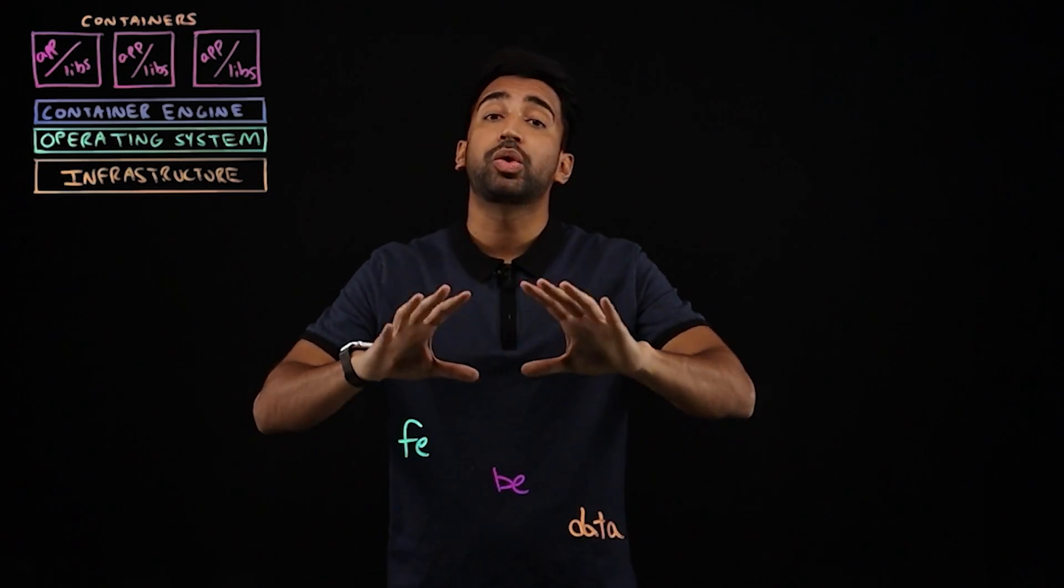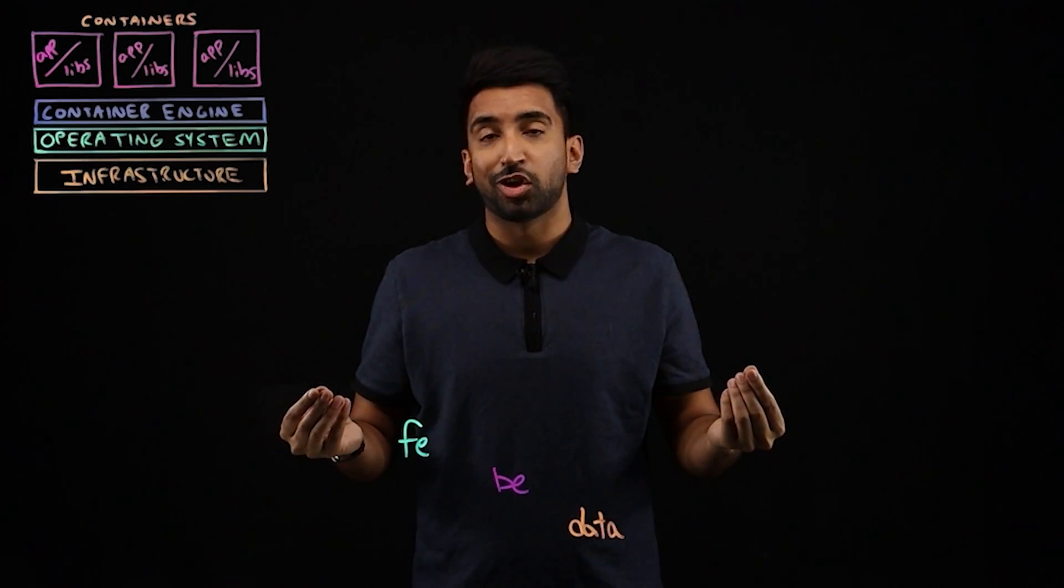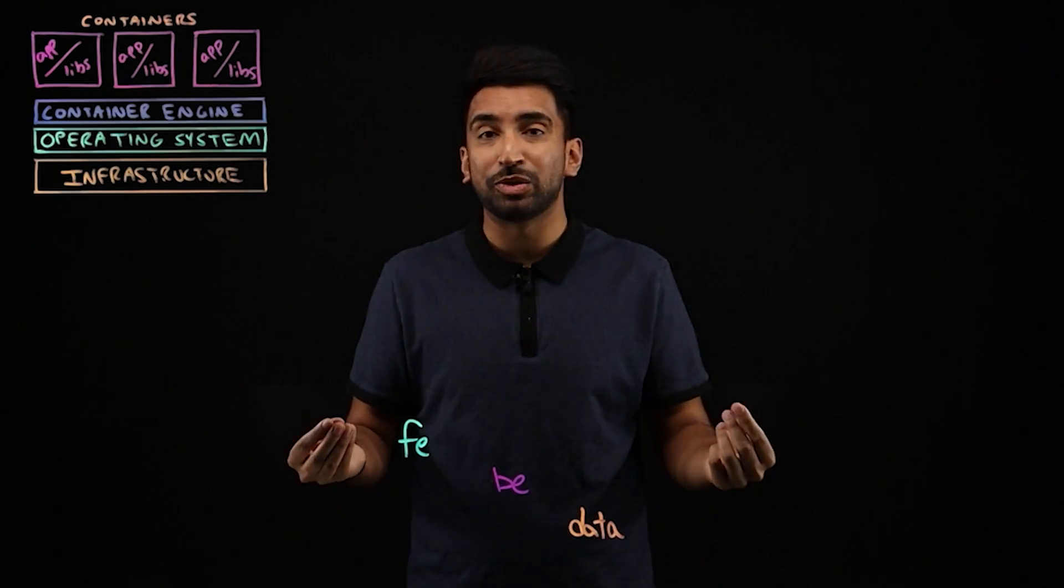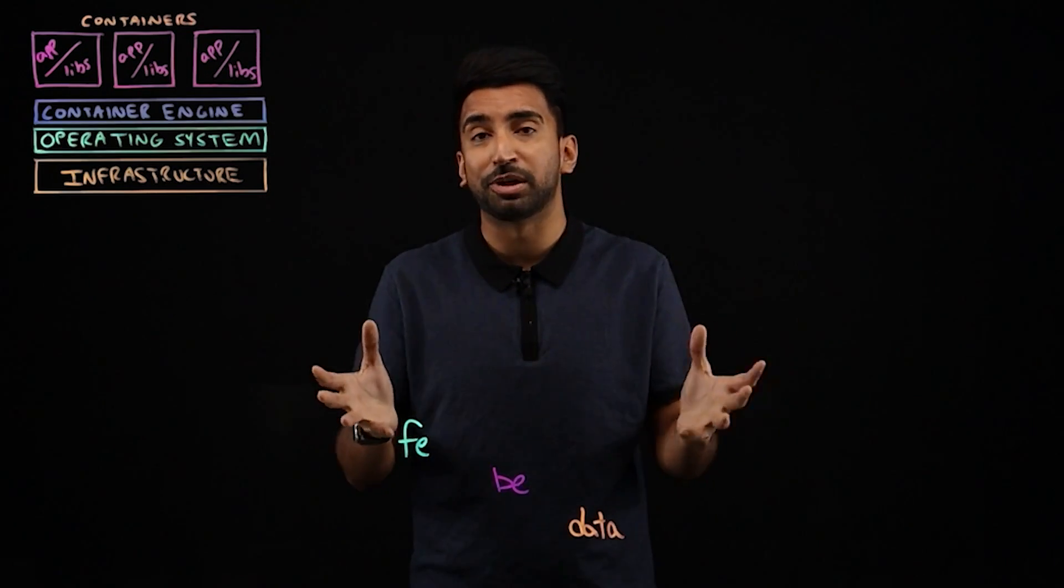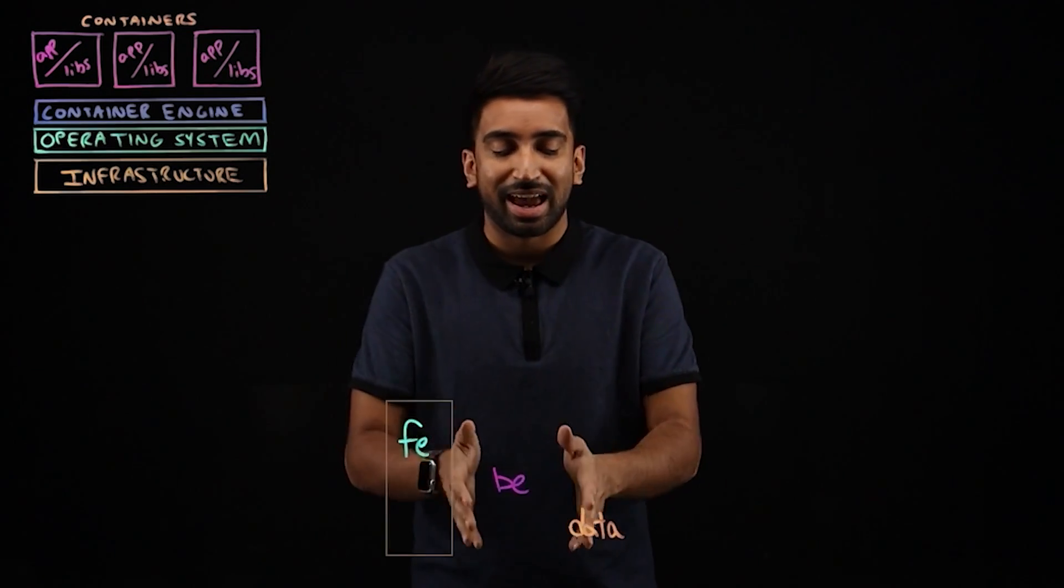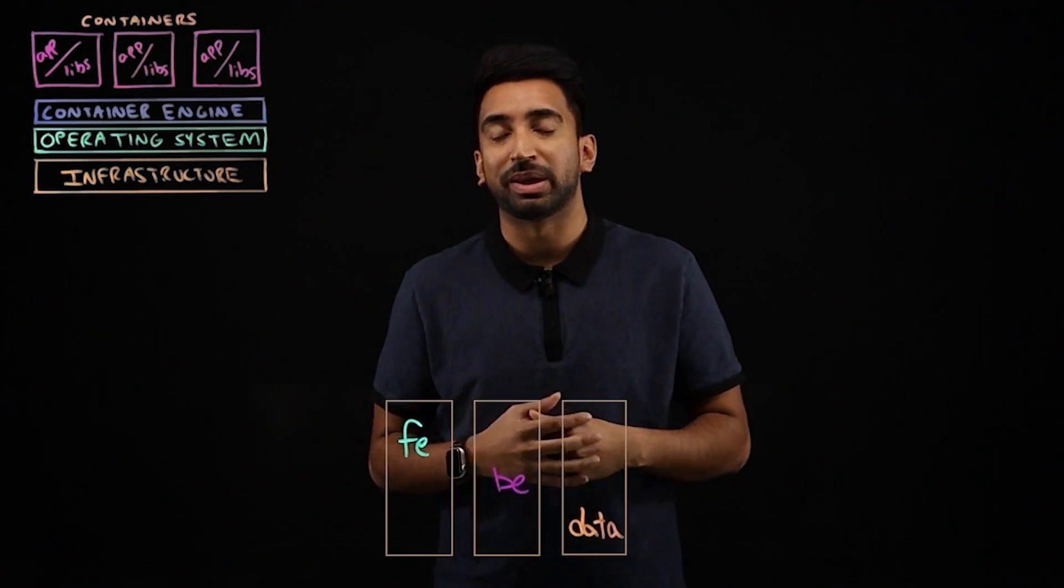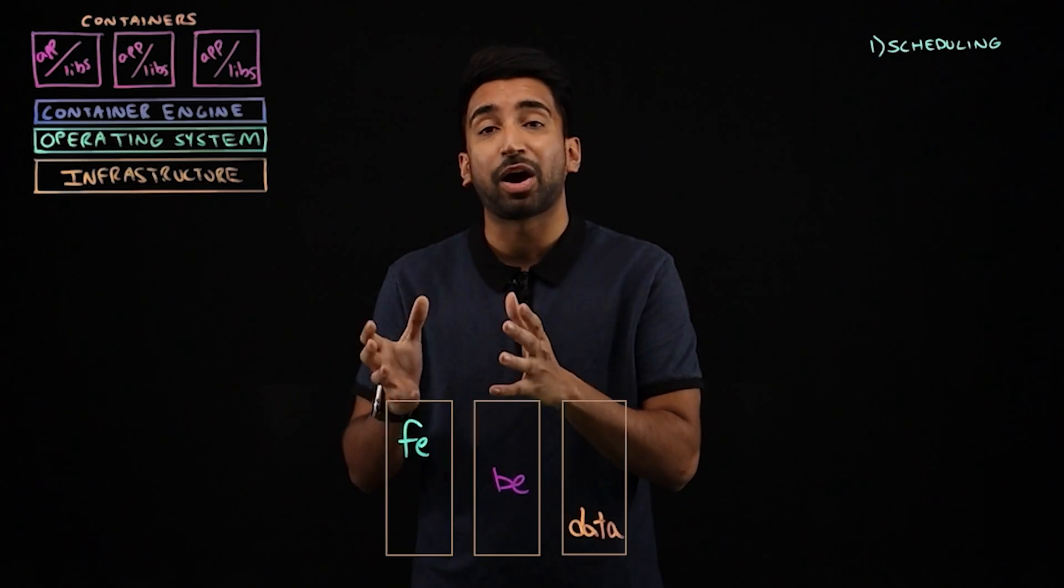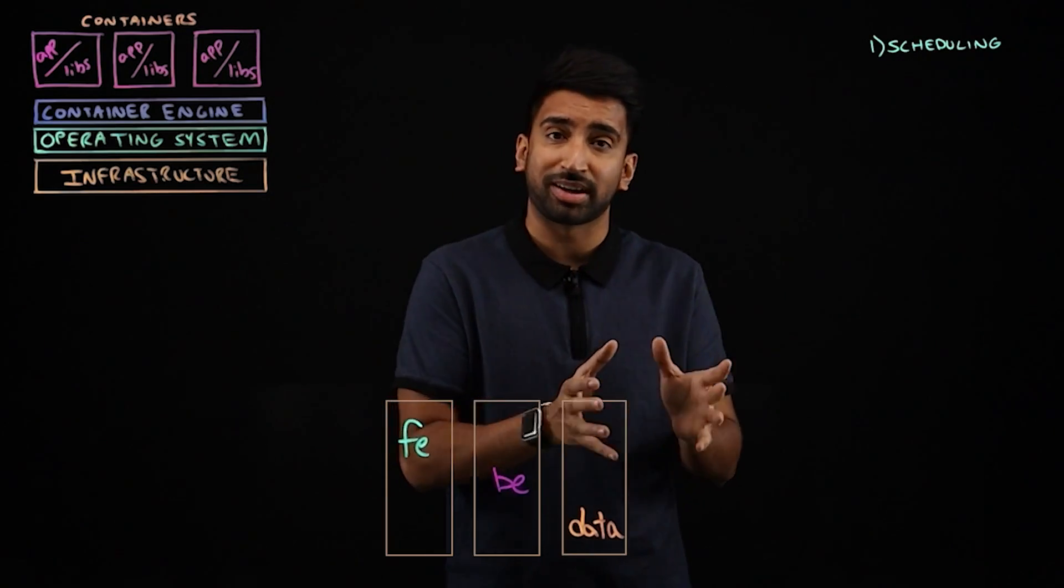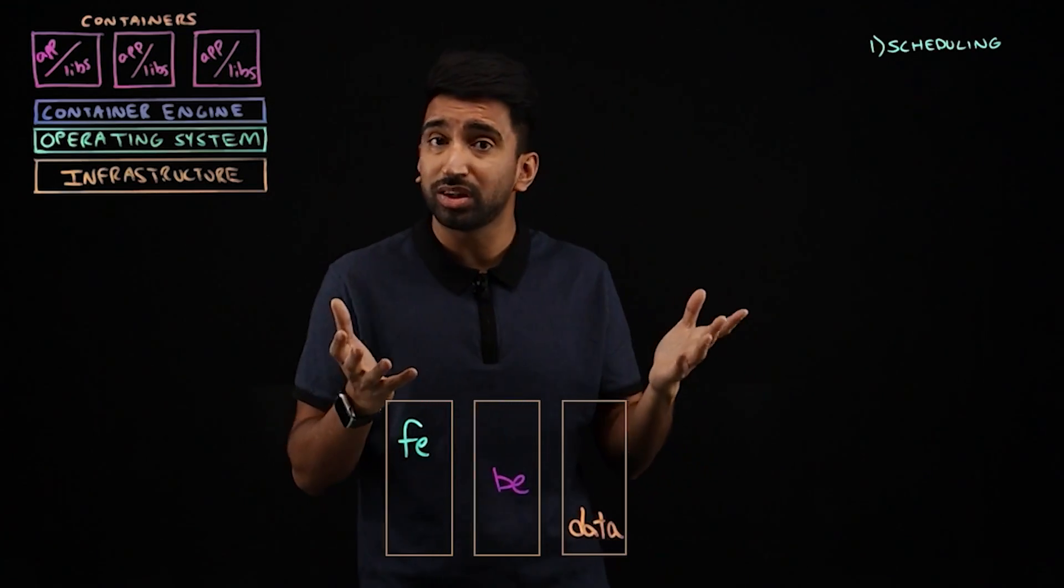And things are running great on our local machine, but we need to take this to scale. So we spin up some EC2 machines, some instances, basically some compute on AWS, and we've got the containers running. The first challenge I'm going to run into when I'm doing this is something called scheduling. It's figuring out where to run these containers in the most effective way. And that's something that Kubernetes does really well.